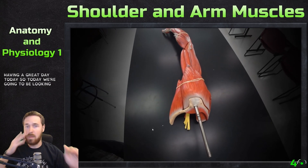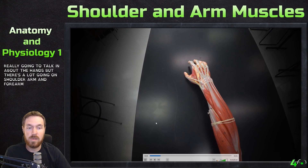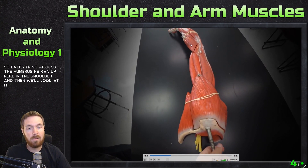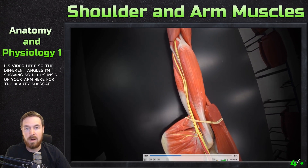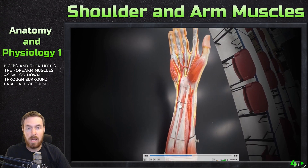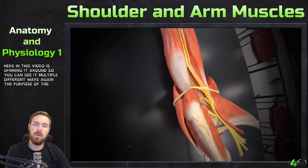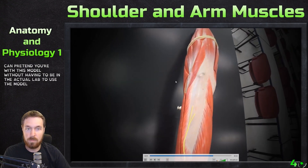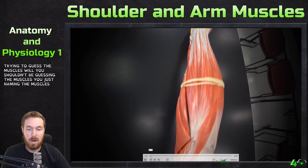Hello everyone, hope you're having a great day. Today we're going to be looking at the muscles of the shoulder, the arm, and the forearm — we're not really going to be talking about the hands. First we'll look at everything around the humerus, the shoulder, and then everything around the forearm. The purpose of these videos is so you can pretend you're with this model without having to be in the actual lab, so feel free to play this over and over again as you're naming the muscles.